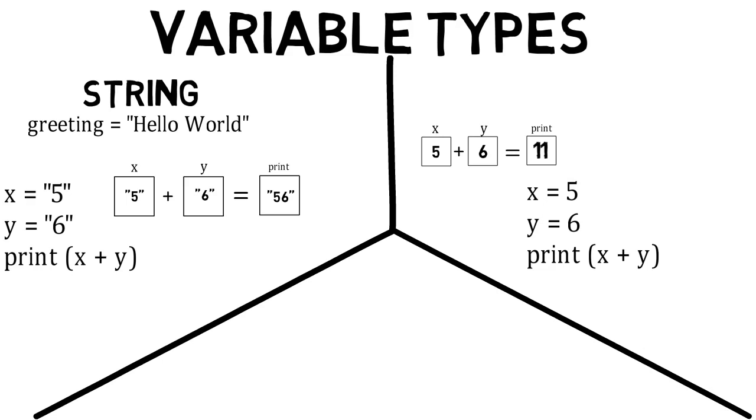The first example used another variable type called an int, or integer. This is any whole number. In order to use decimal numbers, we use a third variable type called a float.